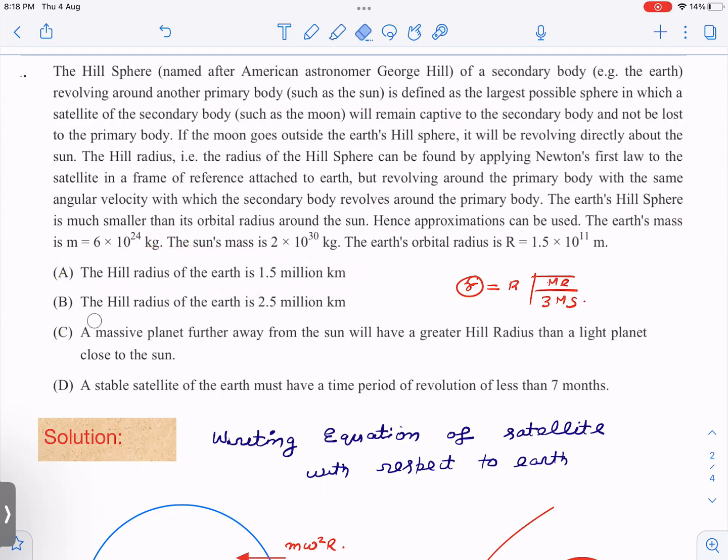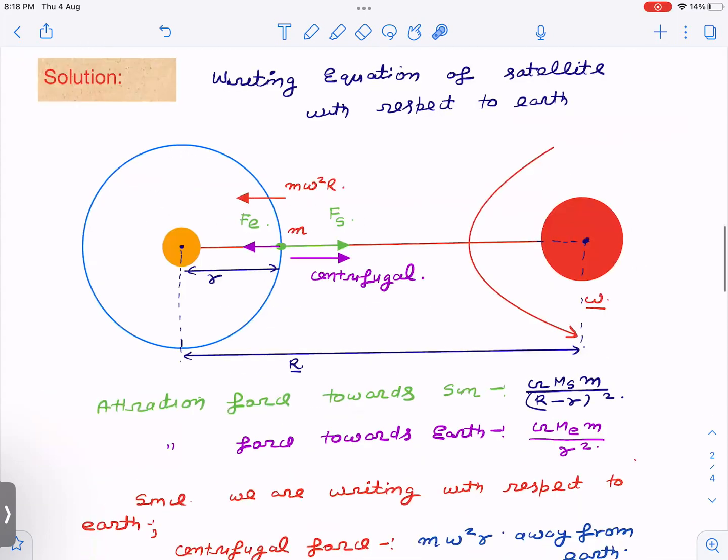Let us understand this. So this is the sun, this is Earth, the small one, and this is the Hill sphere of radius small r.